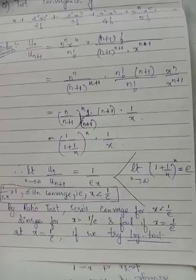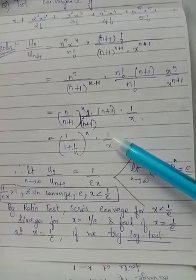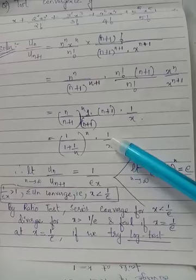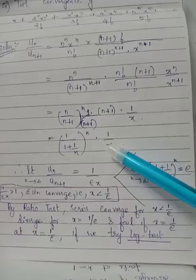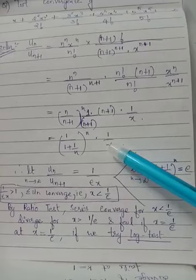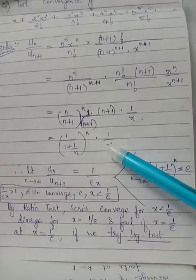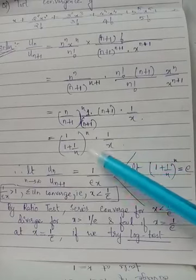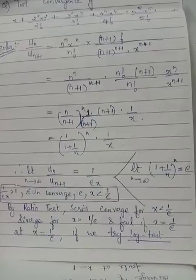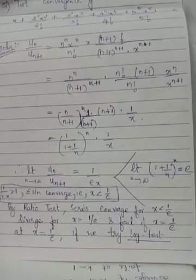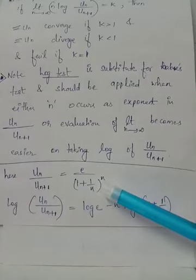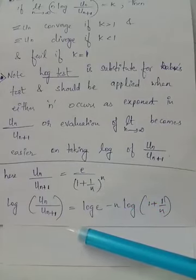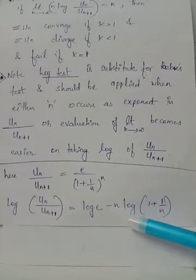When we substitute x = 1/e into the ratio u_n/u_{n+1}, before application of the limit it looks like e / (1 + 1/n)^n. That is why at x = 1/e, when we evaluate u_n/u_{n+1}, we have the expression e / (1 + 1/n)^n. When we take log on both sides for this expression, we have log(u_n/u_{n+1}) = log e − n·log(1 + 1/n).